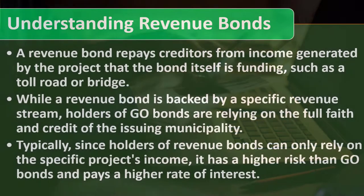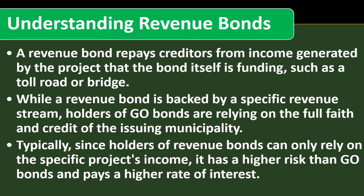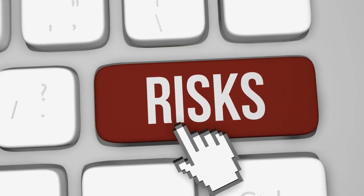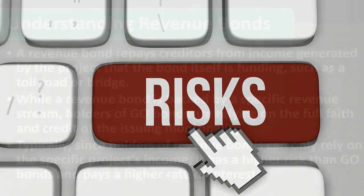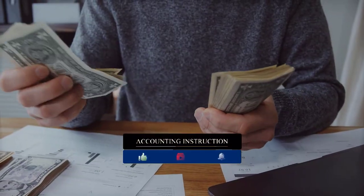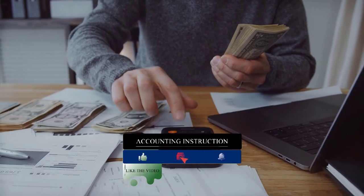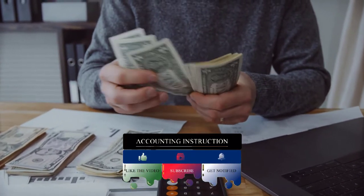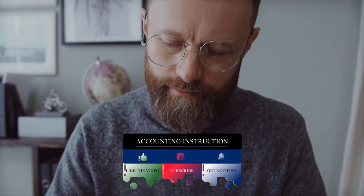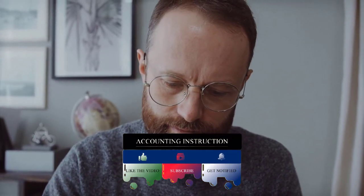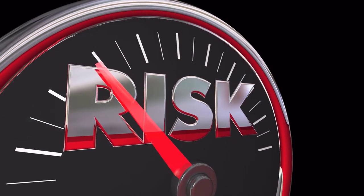Since holders of revenue bonds can only rely on the specific project's income, it is a higher risk than GO bonds, and therefore pays a higher rate of interest. Any time we are taking on more risk, given market conditions, you would expect to get a higher return. If I wasn't getting a higher return, I would invest in a lower-risk bond with an equal return. The market understands that higher risks should entail higher returns, so the market demands higher returns for higher-risk positions.